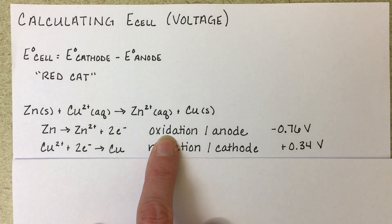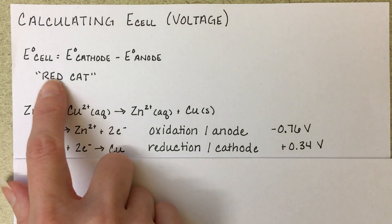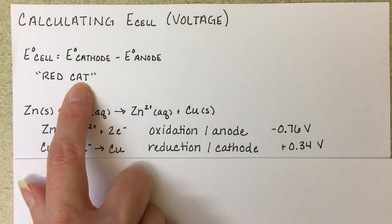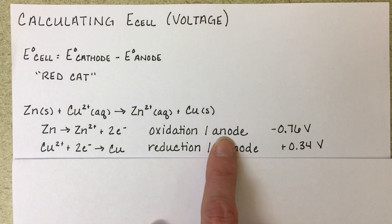Because oxidation is loss and reduction is gain, the REDCAT mnemonic trick reminds us that the reduction takes place at the cathode, which means that this half reaction is occurring at the cathode and the other is occurring at the anode.